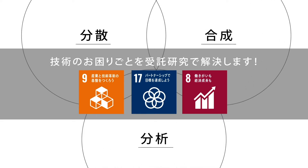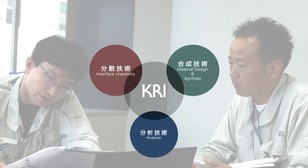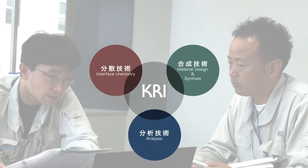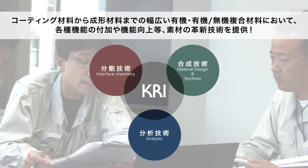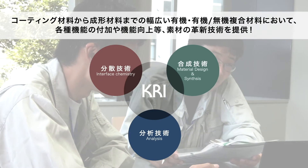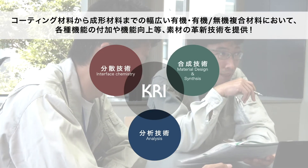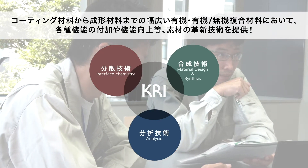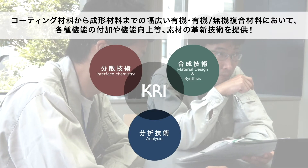便利で快適な社会、安心・安全な社会、環境負荷の低減、これらを実現するための技術のお困りごとを、受託研究開発で支援する、それがKRIの新機能性材料研究部です。これまで我が部では、分散・合成・分析の3つの技術をベースとして、コーティング材料から成形材料までの幅広い有機・有機無機複合材料に関する、さまざまなお客様のご要望に数多く応えてきました。